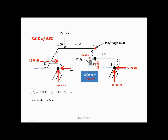We have 16 kN going in the positive direction, 5.63 going in the negative direction, 5.49 going in the negative direction, and AX also going in the negative direction. Solving for AX gives 4.89 kN acting to the left. We have a positive number, which means our assumption for the sense of AX was correct. Now, as you can see, we have all four reactant forces solved.